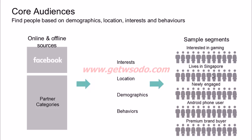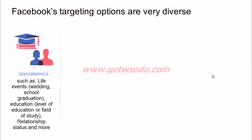To give a quick recap of core targeting options: you can target people based on demographics, including life events such as birthdays, anniversaries, recently married, recently engaged, or recently graduated. You can also target based on level of education, field of study, and relationship status — all of which help you target your products to the right people.